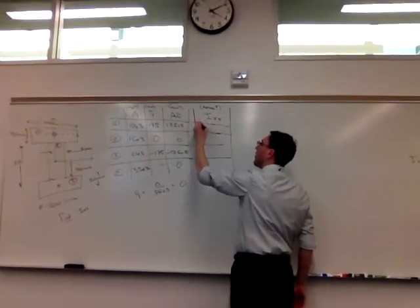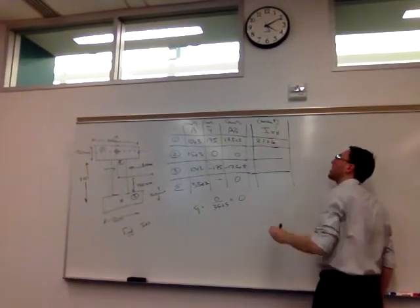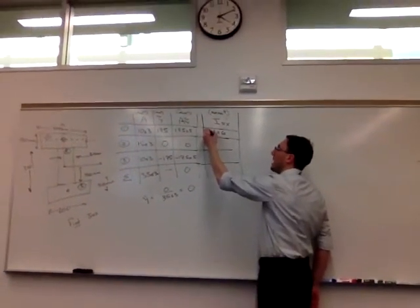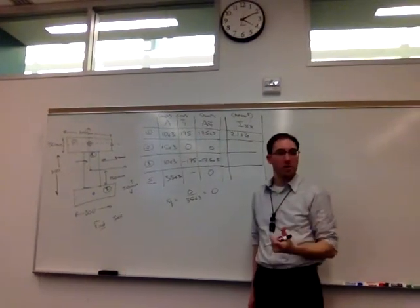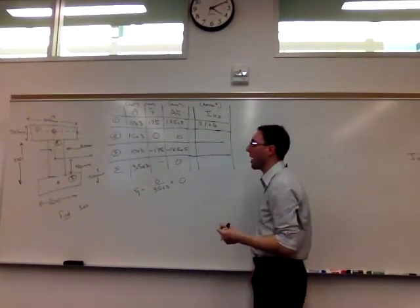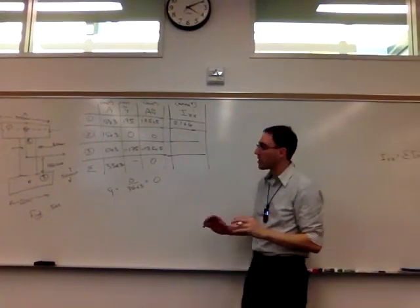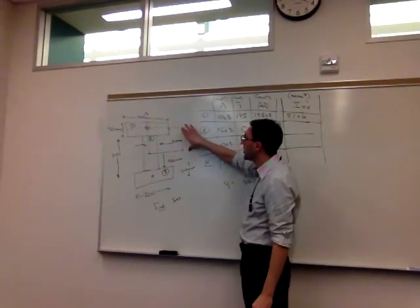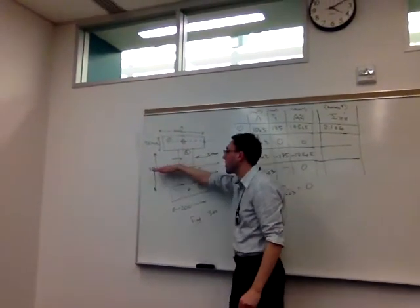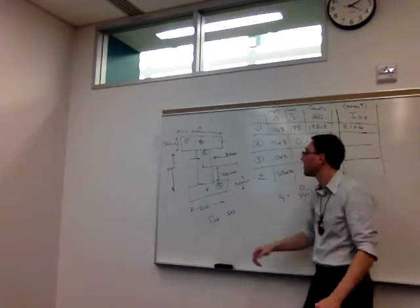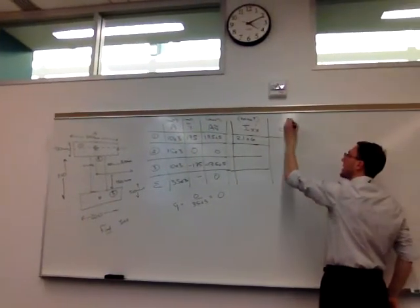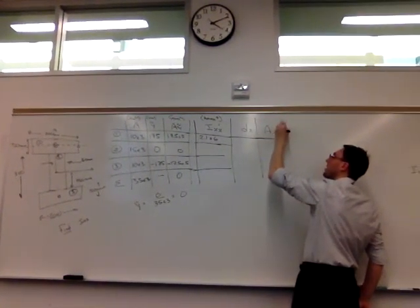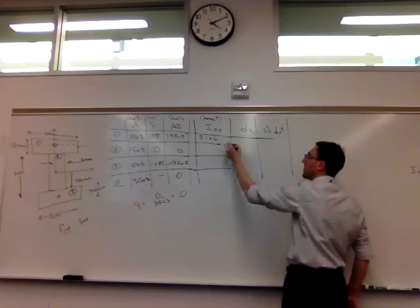As a result, I will get 2.1 times 10 to the sixth millimeters to the fourth power as shape number one's moment of inertia about its own centroidal axis. Keep in mind, ultimately, what we need, and that's where the adjustment terms will come in. We have to adjust for it because we actually want the moment of inertia about this axis. What we will compute, this dx value and then this Adx squared value that compensates for that difference.